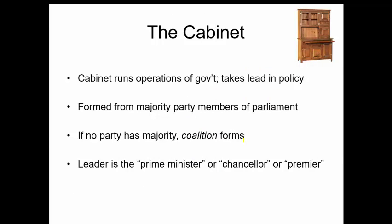The cabinet runs the operations of government and takes the lead in policy. So the cabinet in a parliamentary system has quite a bit more controlling power — they are running the show. They are the administrative body of the ruling party that has control of the parliament, formed by the majority party members of parliament. If no party has a majority, a coalition forms to maintain majority control. The leader of this coalition is called the prime minister, or chancellor in some systems, or premier in others, because their party was elected in control of the parliament.